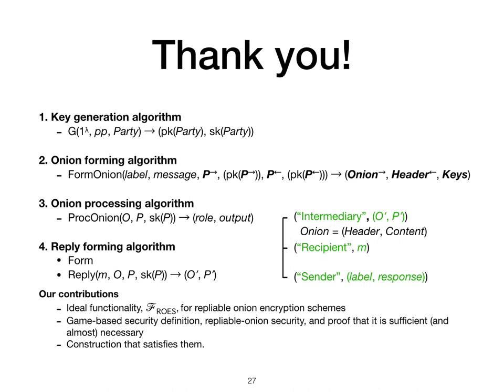To summarize, in this paper we formalized the notion of repliable onion encryption. We defined security in the simplified UC model by providing a description of the ideal functionality F-Rows, and presented a game-based definition that is sufficient and almost necessary for realizing F-Rows. Finally, we gave the first construction of a provably secure repliable onion encryption scheme. This concludes the presentation of our paper. Thank you for your attention.